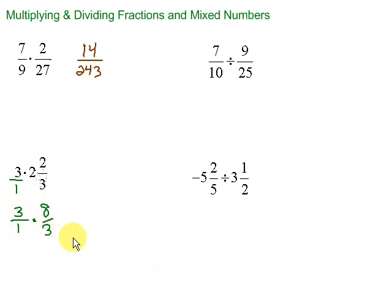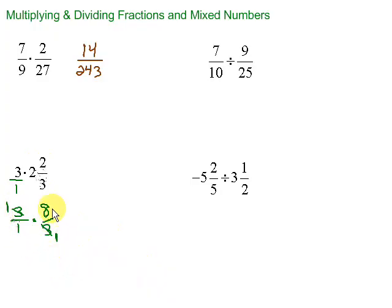Now, when we're multiplying fractions, we can simplify. In this situation, we see we have a 3 on the top and a 3 on the bottom. We can cancel those out by dividing by 3 on the top and the bottom. This 3 becomes a 1, this 3 becomes a 1, then we can multiply across and we get 1 times 8 is 8, and 1 times 1 is 1. 8 over 1 is simply 8.